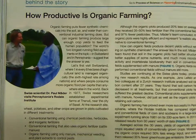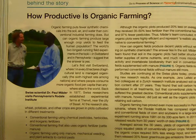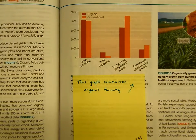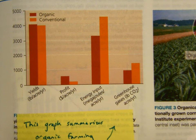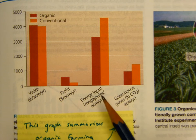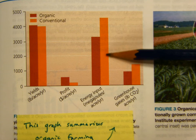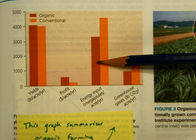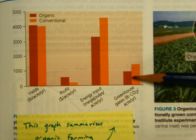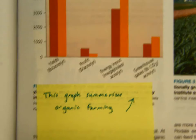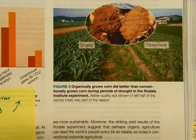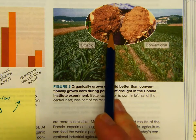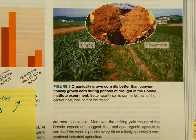This science-behind-the-story section looks at how productive organic farming is compared to conventional farming. The chart summarizes it well — organic is in red, conventional in orange. The last two data points are really impressive: energy input is much higher for conventional farming compared to organic, and conventional farming also produces more greenhouse gases. Looking at the dirt, you can also see how organic soil is dark and rich, whereas conventional soil looks stripped of its nutrients.